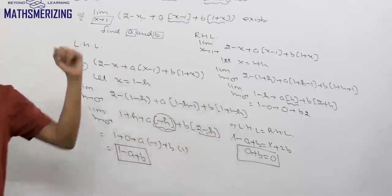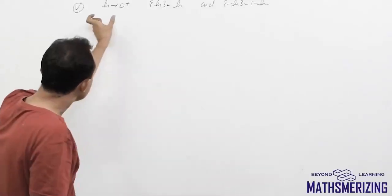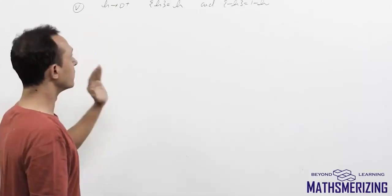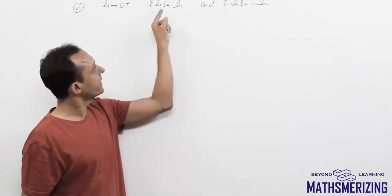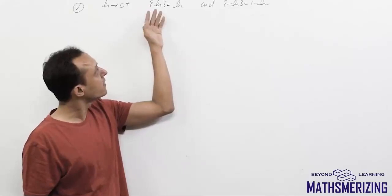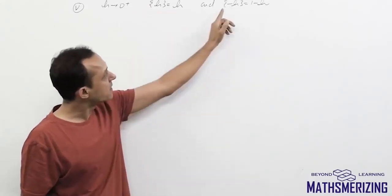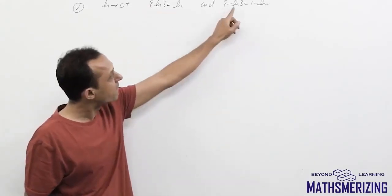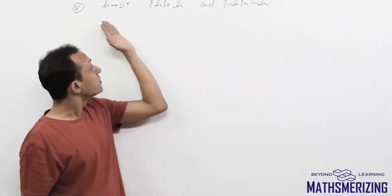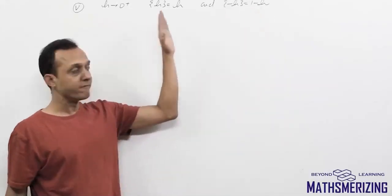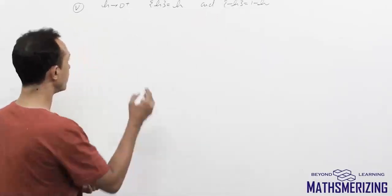A related property: if h is a very small positive number, then the fractional part of h is simply h (since it lies between 0 and 1), and the fractional part of minus h is 1 minus h. We use this property when solving limit problems.